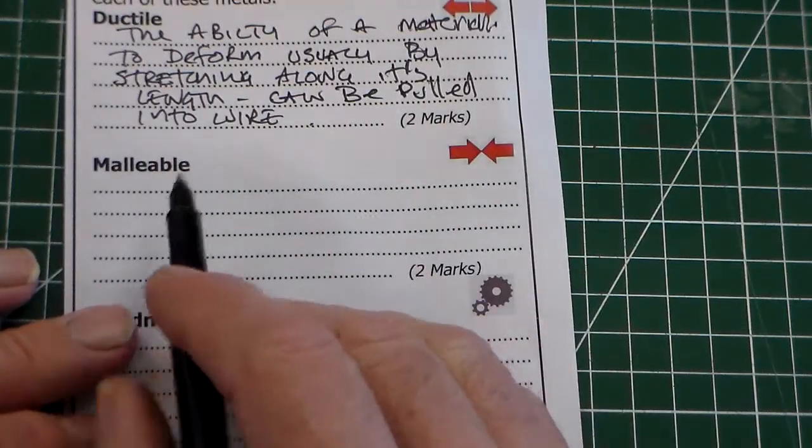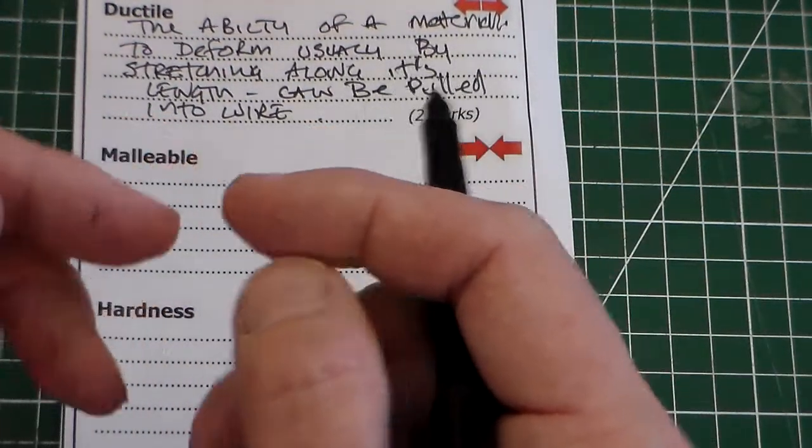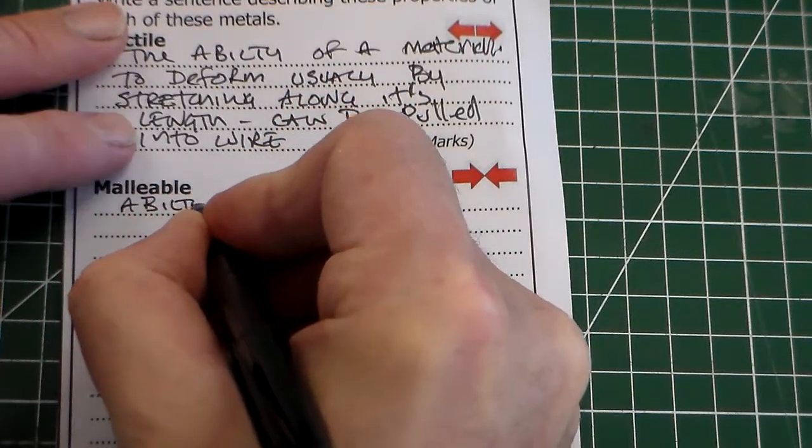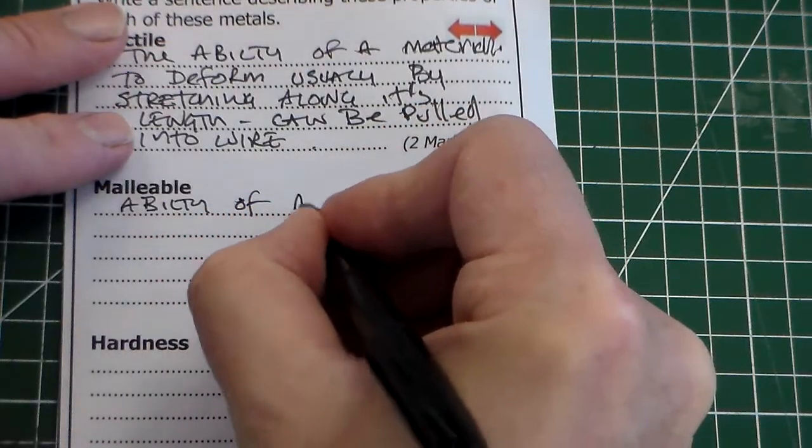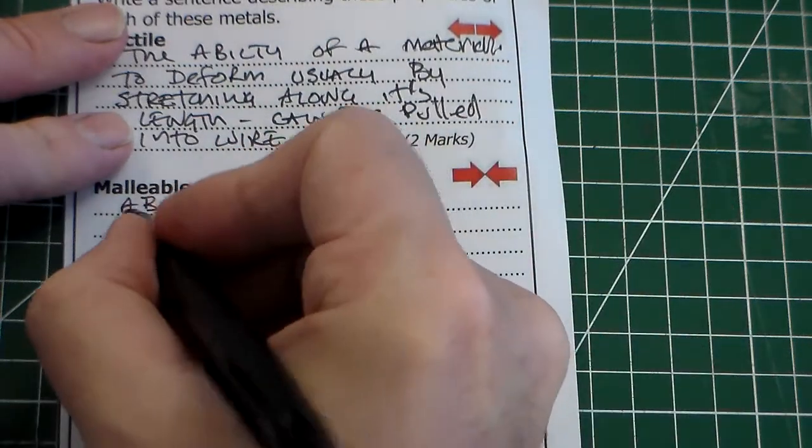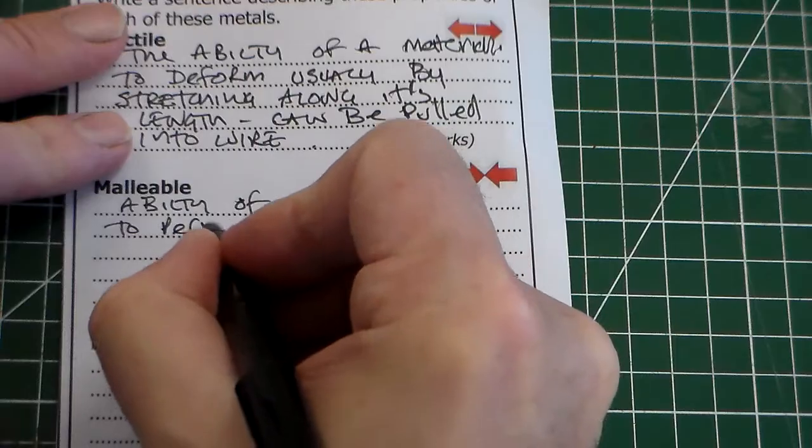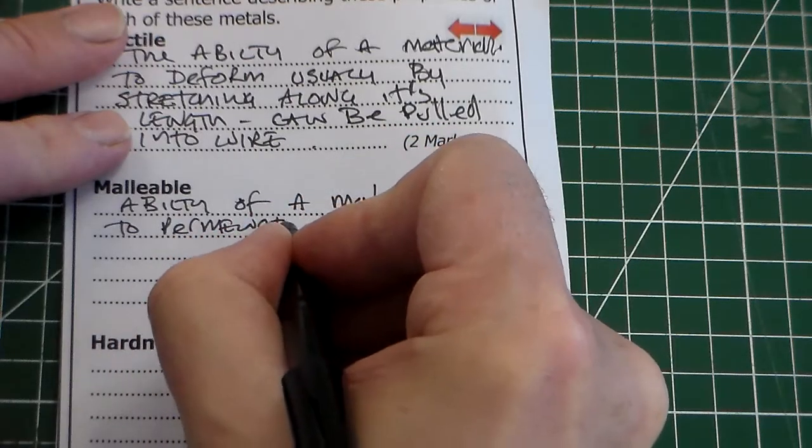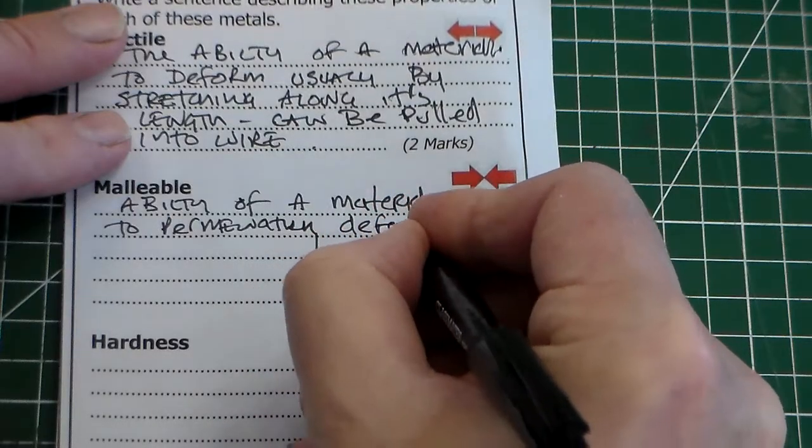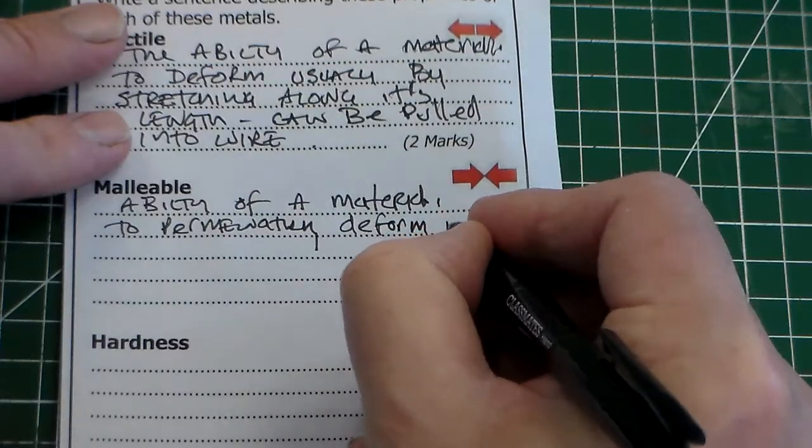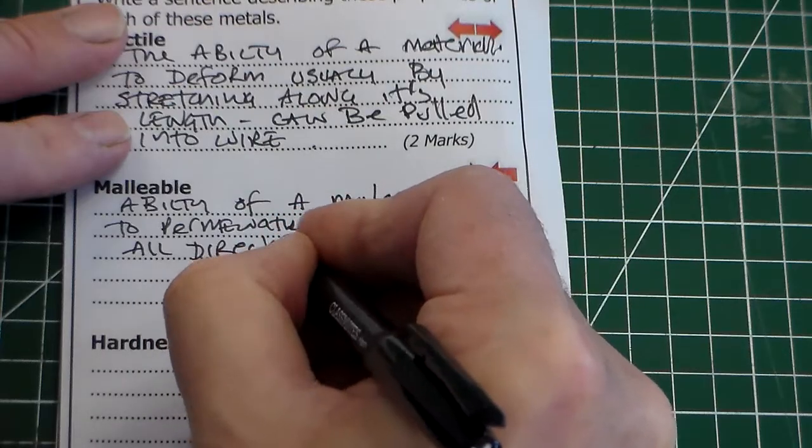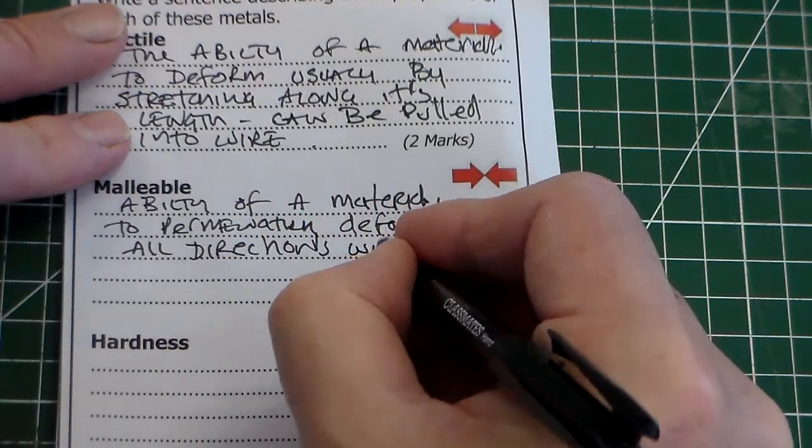Now, the next one, malleable. And we can see here from the logo, I've got pushing in rather than pulling out. So malleable is the ability of a material to permanently deform, and this is in all directions without cracking.